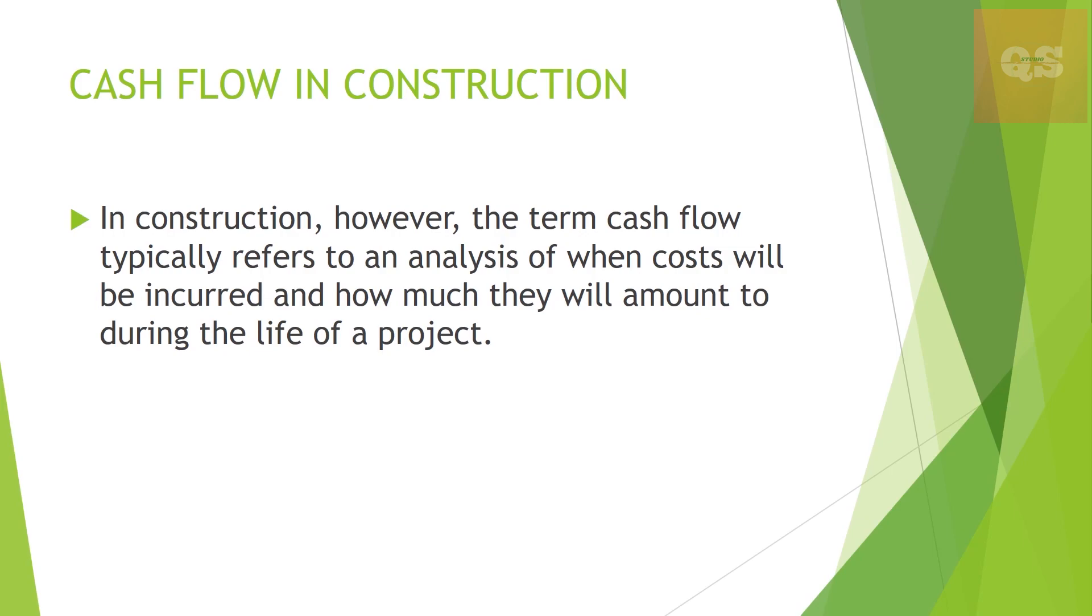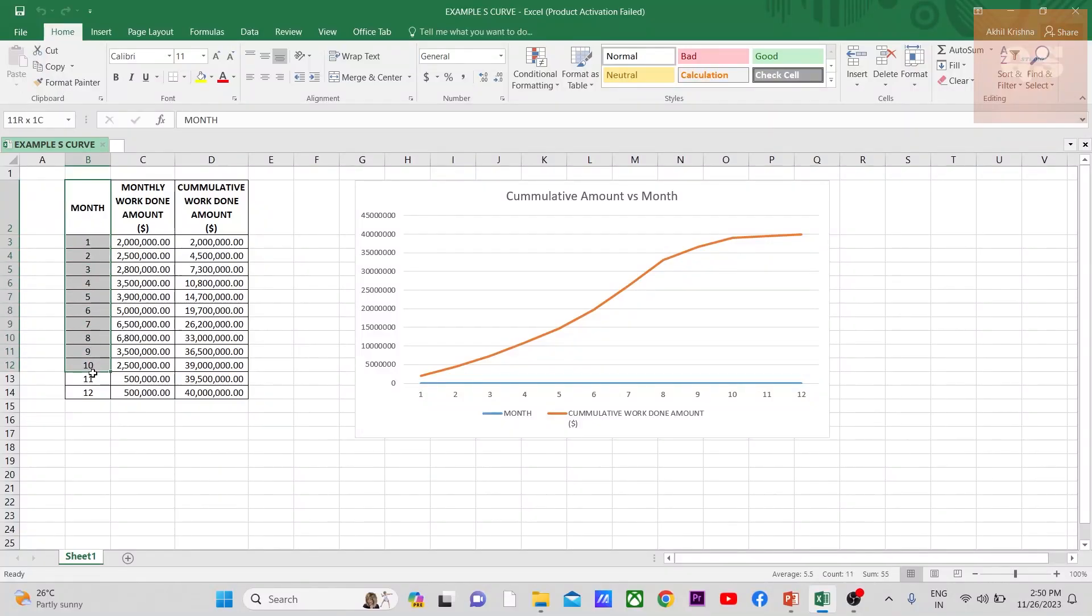To understand it more clearly, let's move into an Excel that I have prepared. If you see here, I have prepared an Excel sheet. This column is the month. Let's assume that the project is for a duration of 12 months. The total amount or the value of the project is 40 million US dollars.